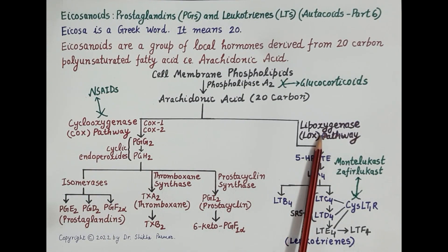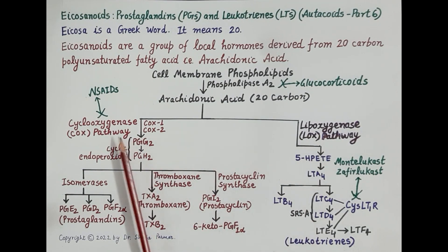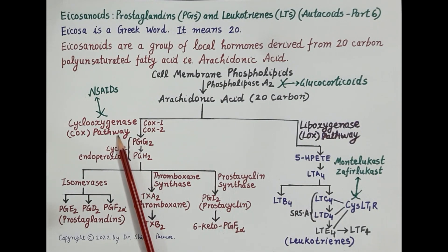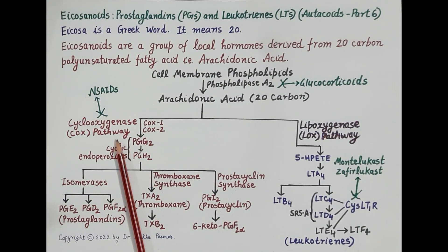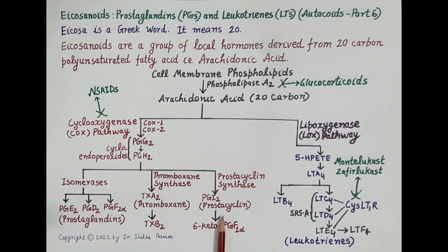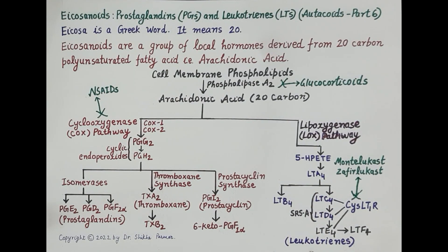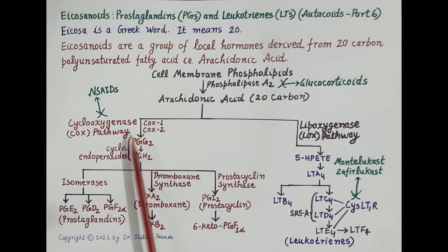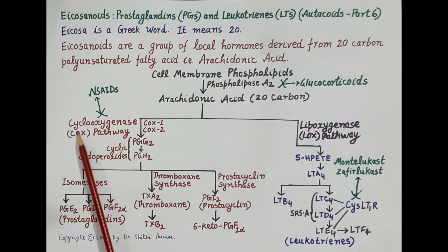The cyclooxygenase (COX) pathway generates eicosanoids with a ring structure. Prostaglandins, thromboxane A2, and prostacyclin are all derived by the COX pathway. The lipoxygenase pathway produces leukotrienes, which are open-chain compounds.